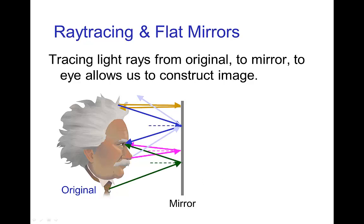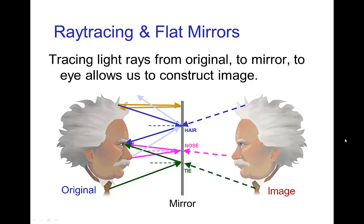And similarly, one from his necktie striking this third spot on the mirror, he sees that. So these three locations on the mirror are where he sees the top of his head, his hair, where he sees his nose, and where he sees his necktie. So tracing those back, that is what he appears to see is this image inside the mirror.